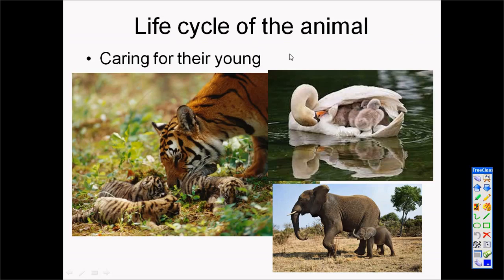After the female animal gives birth, the animals care for their young. A tiger will care for her young until they are old enough to care for themselves, the same with the elephant and the geese in this picture. They train them how to hunt and how to do things in different ways. So the life cycle of animals includes fertilization, pregnancy and growth, and caring for the young.